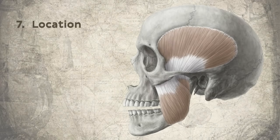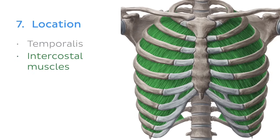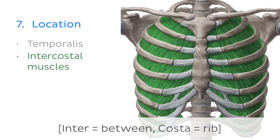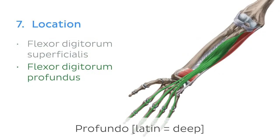And finally, unsurprisingly, location also pops up in muscle names — it can indicate the region a muscle is found in. For instance, we have the temporalis muscle, found over the temporal region of the skull, or the intercostal muscles, located between the rib bones of the thoracic cage. The muscle name might also refer to its relative position to another muscle. For example, the flexor digitorum superficialis is more superficial than its counterpart, the flexor digitorum profundus.